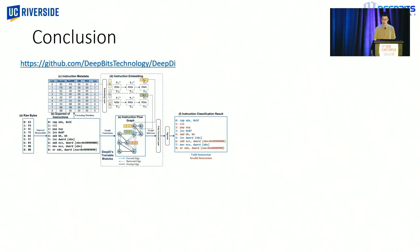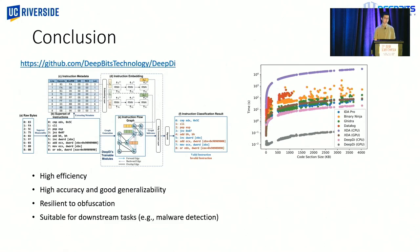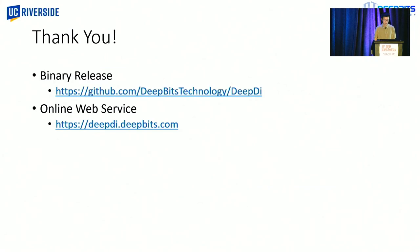And to conclude, we propose a novel deep learning-based disassembler that is super-fast. And apart from efficiency, it can also achieve high accuracy and good generalizability, resilient to obfuscation, and can be used in various downstream tasks. We also have an online version of DeepDi at this URL. So, thank you. You can find our binary release at this GitHub link. And here is also our demo link. And that's pretty much it. Thank you so much. And I'm happy to take any questions.